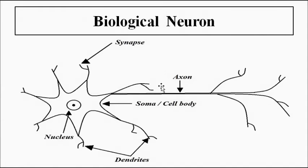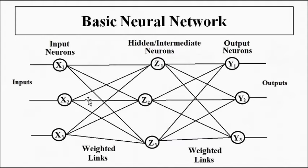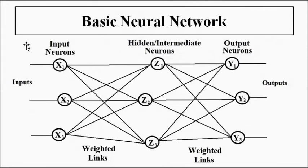All of these functional and structural things are studied and are tried to be replicated in the artificial neural network. The artificial neuron looks something like a node. An artificial neural network looks like a group of these interconnected nodes — artificial neurons.